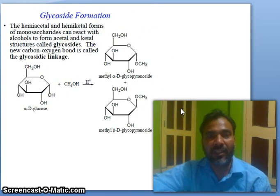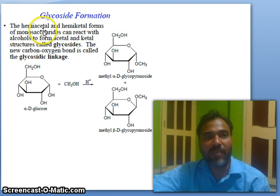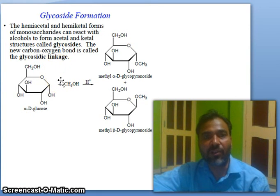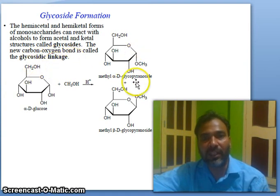Glycoside formation: the hemiacetal and hemiketal forms of monosaccharides can react with an alcohol to form acetals and ketals — a structure called glycosides. The new carbon-oxygen bond formed is called the glycosidic linkage.